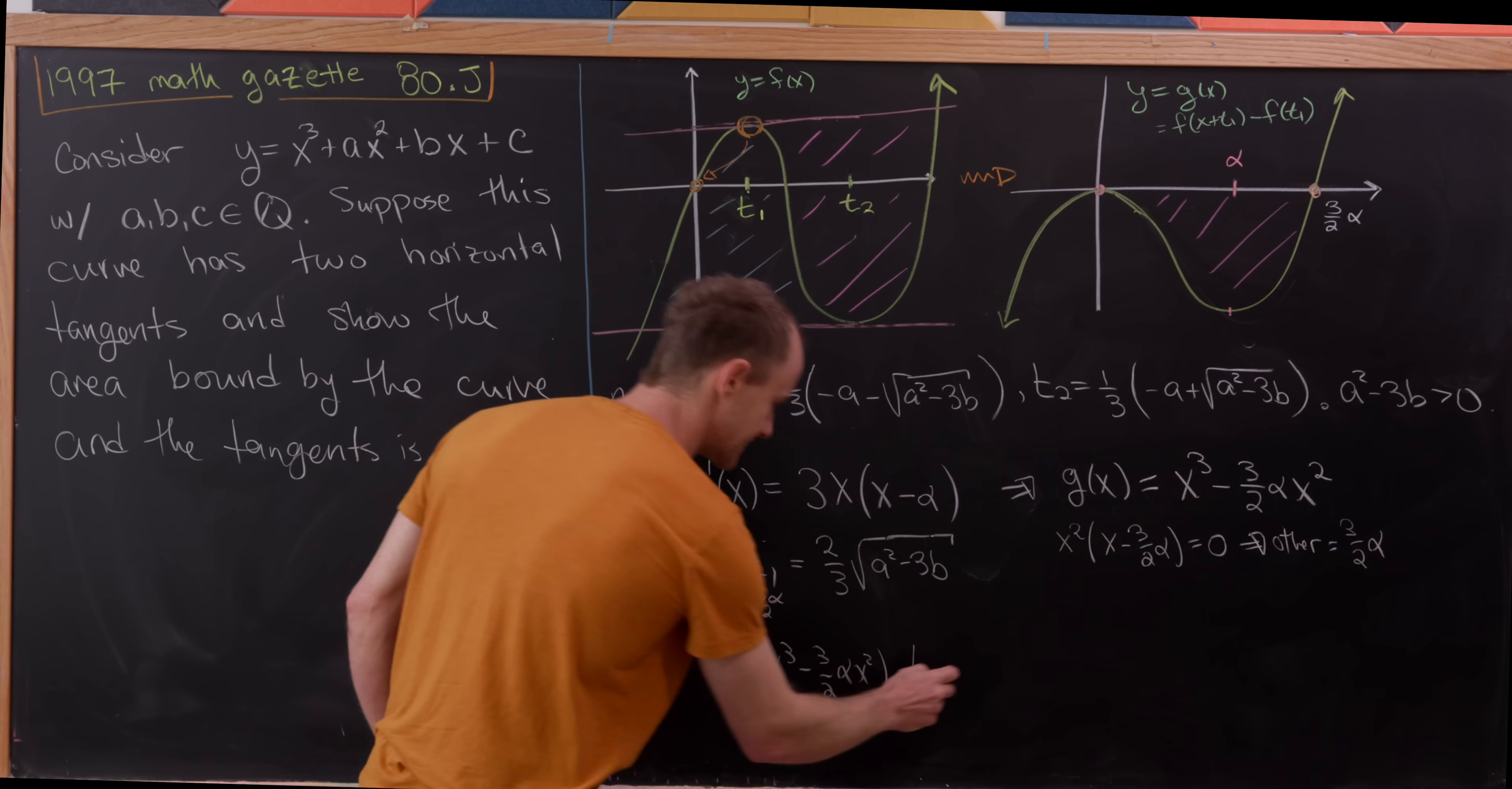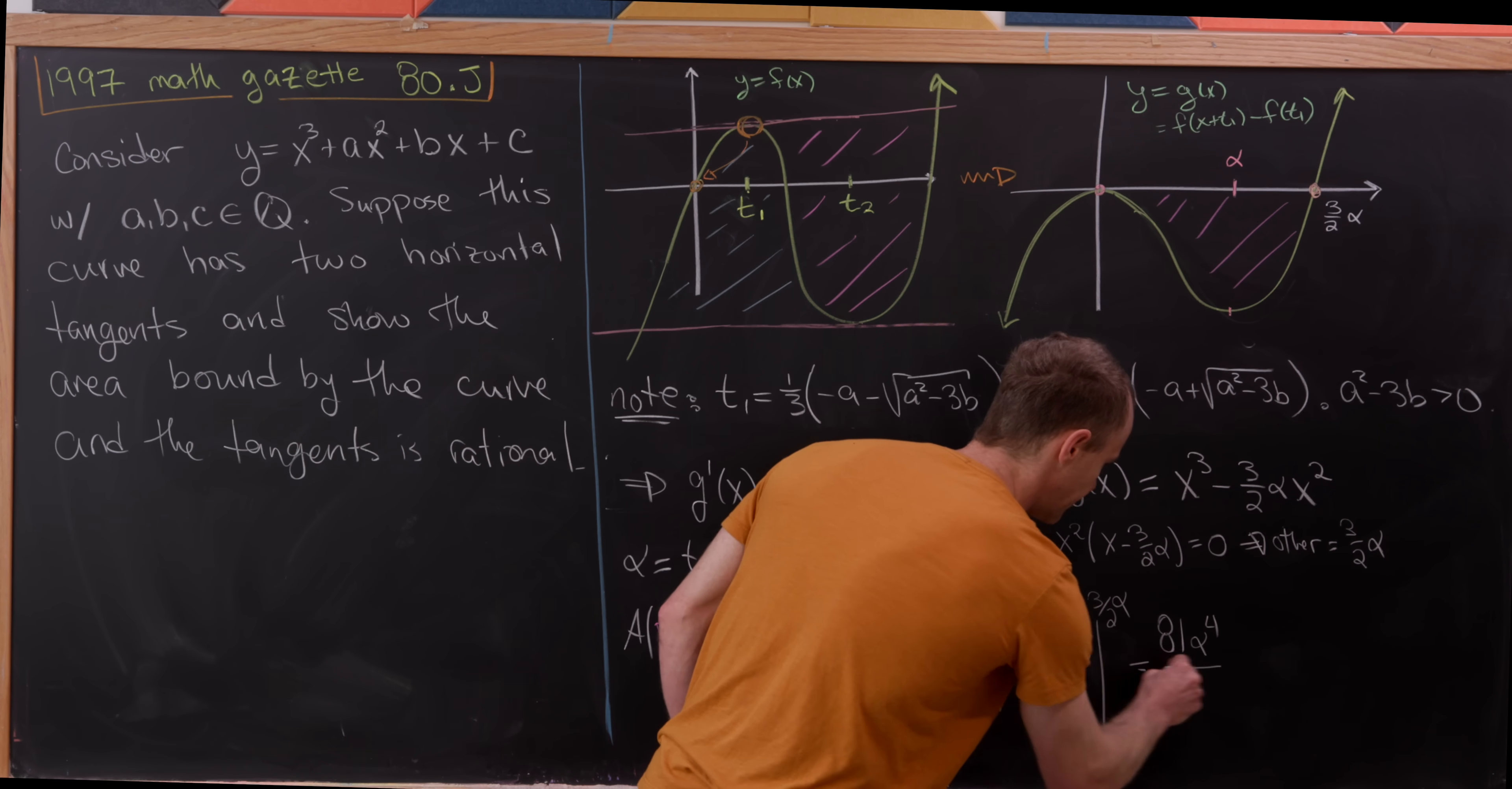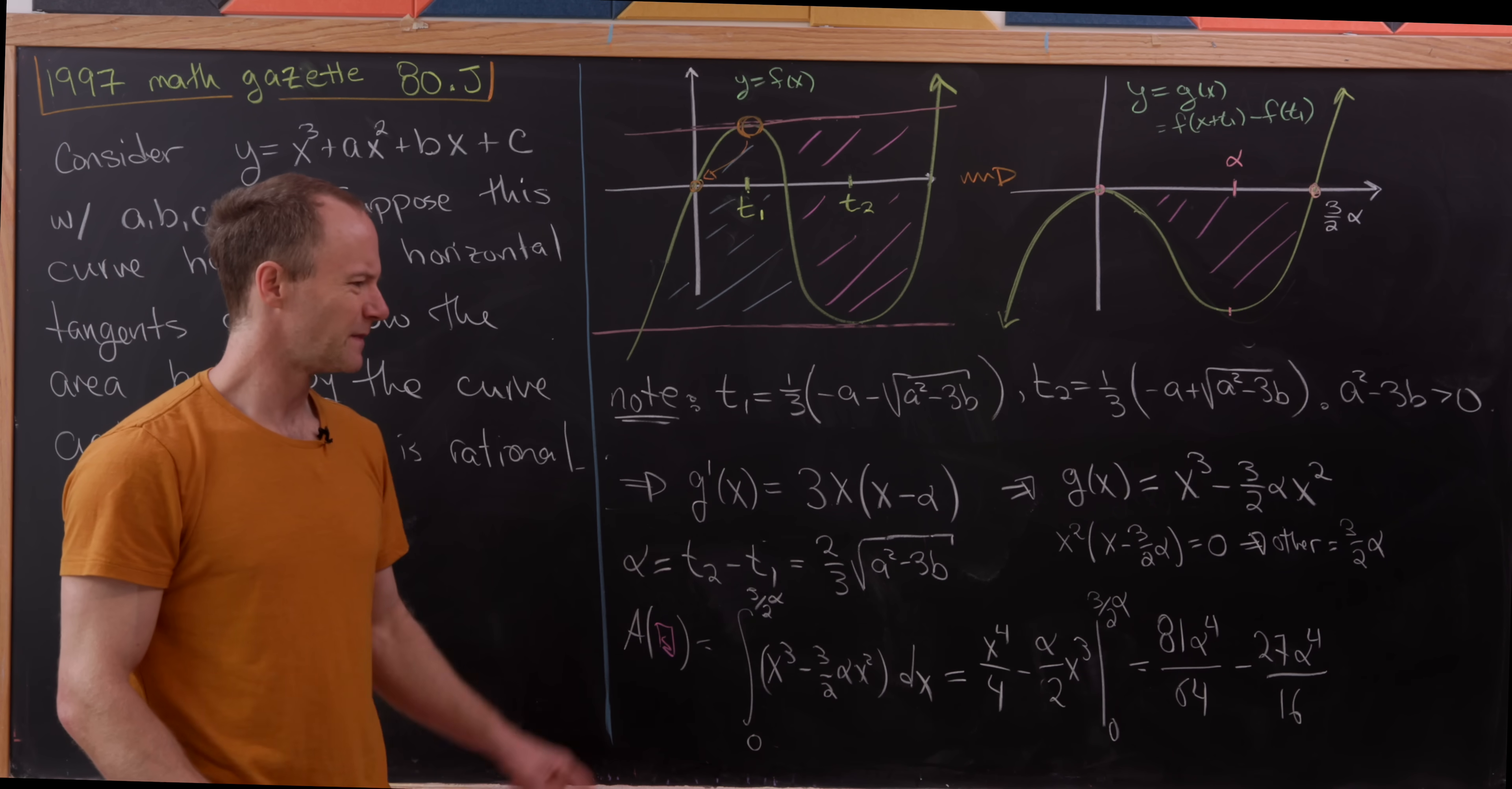So now we can take the antiderivative, and then we'll plug in this 3 halves times alpha. So that's going to give us x to the 4th over 4, and then it's going to be minus alpha over 2 times x cubed. And then we evaluate that from 0 up to 3 halves alpha. Now, let's observe that that's going to end up giving us 81 alpha to the 4th over, we've got 2 to the 4th, which is 16, times this 4 down here, which is 64, and then from that we need to subtract 27, that's 3 cubed, over 16, so 27 alpha to the 4th again over 16, an alpha cubed from the x cubed, and another alpha from this alpha out front.